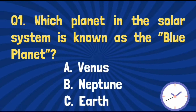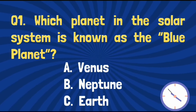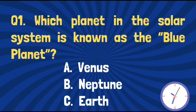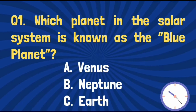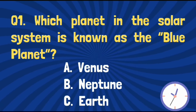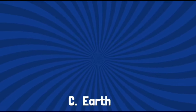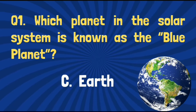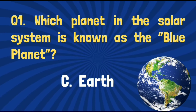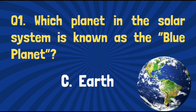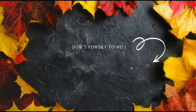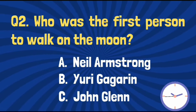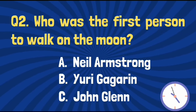Which planet in the solar system is known as the blue planet? The right answer is option C — Earth. Who was the first person to walk on the moon?